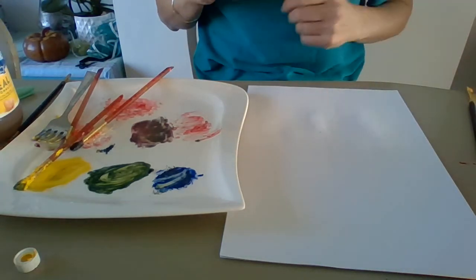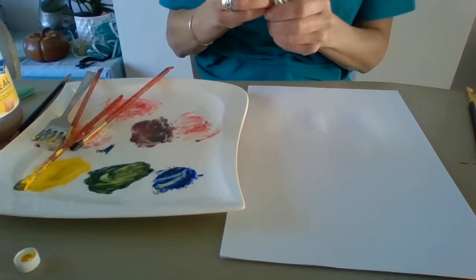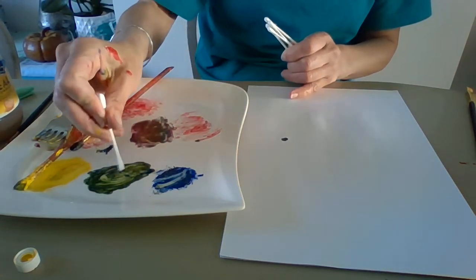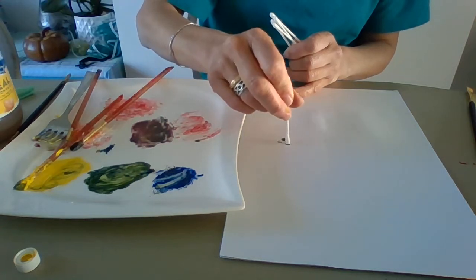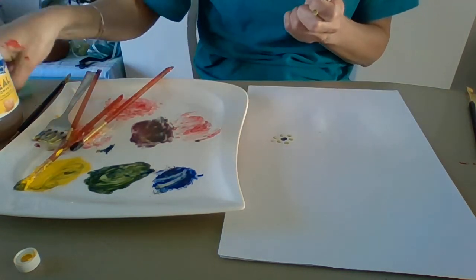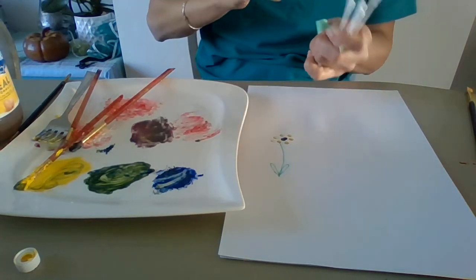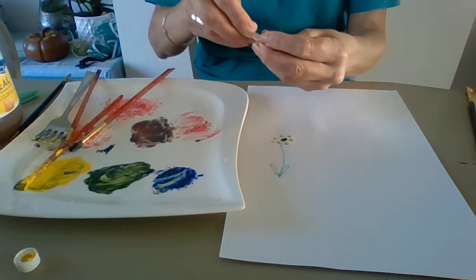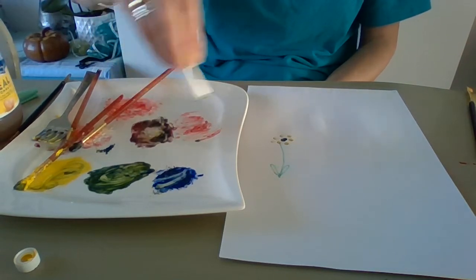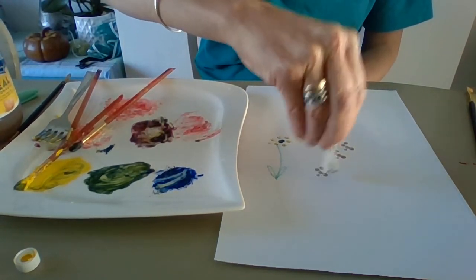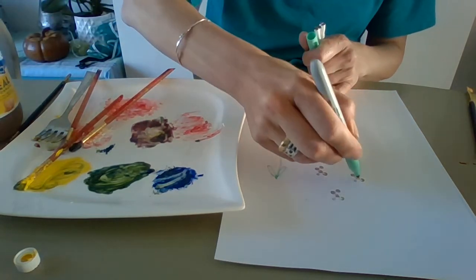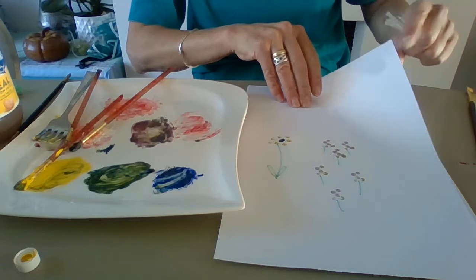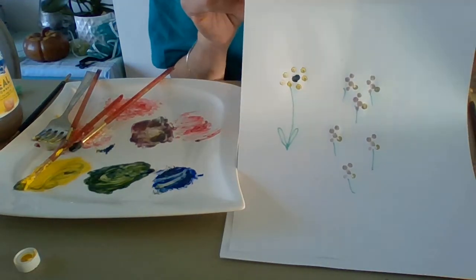I'm going to do one other type of flower. Some of you really enjoyed using cotton buds for flowers. And what you could do is use a cotton bud to make lots of flowers like this. You could even put a lot of cotton buds together and put them all in the paint. And make some flowers that look like this. They look a bit like daisies, don't they? Lots and lots of different ideas.